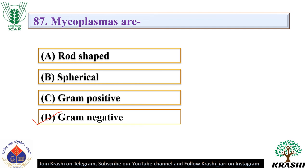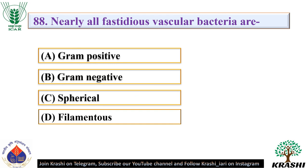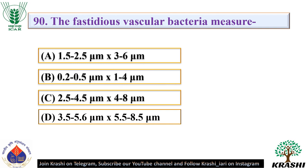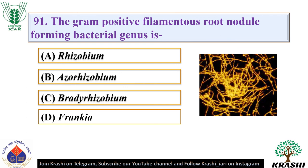Question number 88: Nearly all fastidious vascular bacteria are. The correct answer is option B — gram negative. Question number 89: Fastidious xylem-limited gram negative bacterial diseases are caused by. The correct answer is option C — Xylella fastidiosa. Question number 90: The fastidious vascular bacteria measure. The correct answer is option B — 0.2 to 0.5 micrometers × 1 to 4 micrometers. Question number 91: The gram positive filamentous root nodule forming bacterial genus is. The correct answer is option D — Frankia.